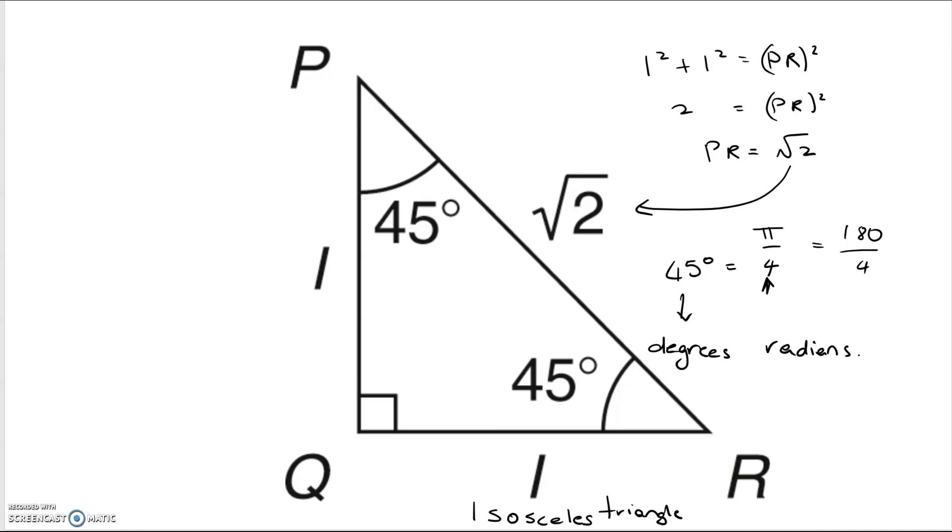So let's find sine 45 degrees, which is the same as sine pi by 4. So sine, take either of the 45s, the sine is the opposite over the hypotenuse, so that would be 1 over root 2. And 1 over root 2 is, using my calculator then, 0.7, I think, is 1 over root 2.